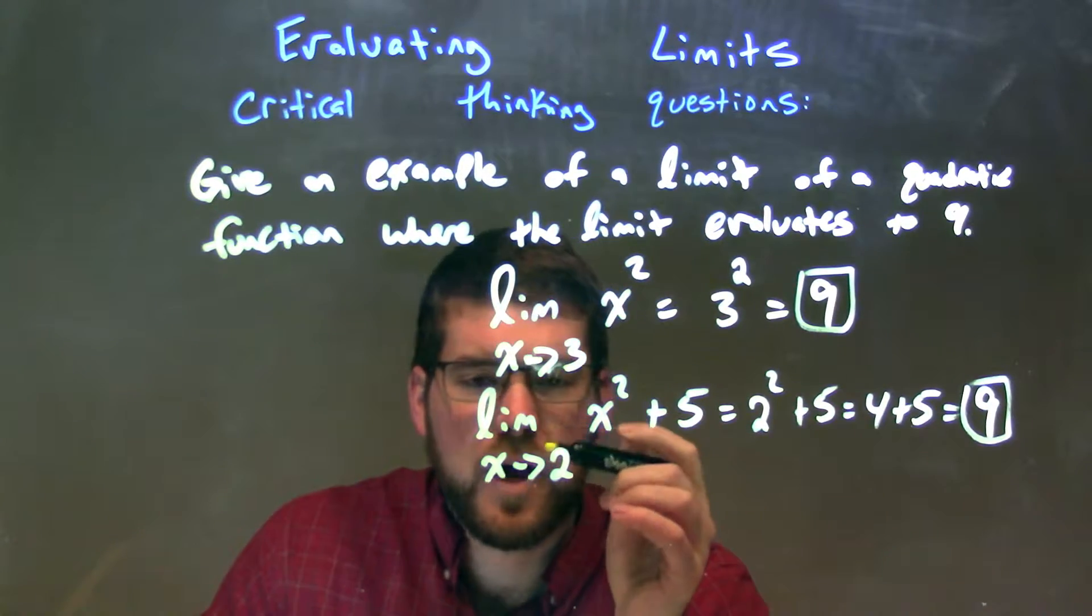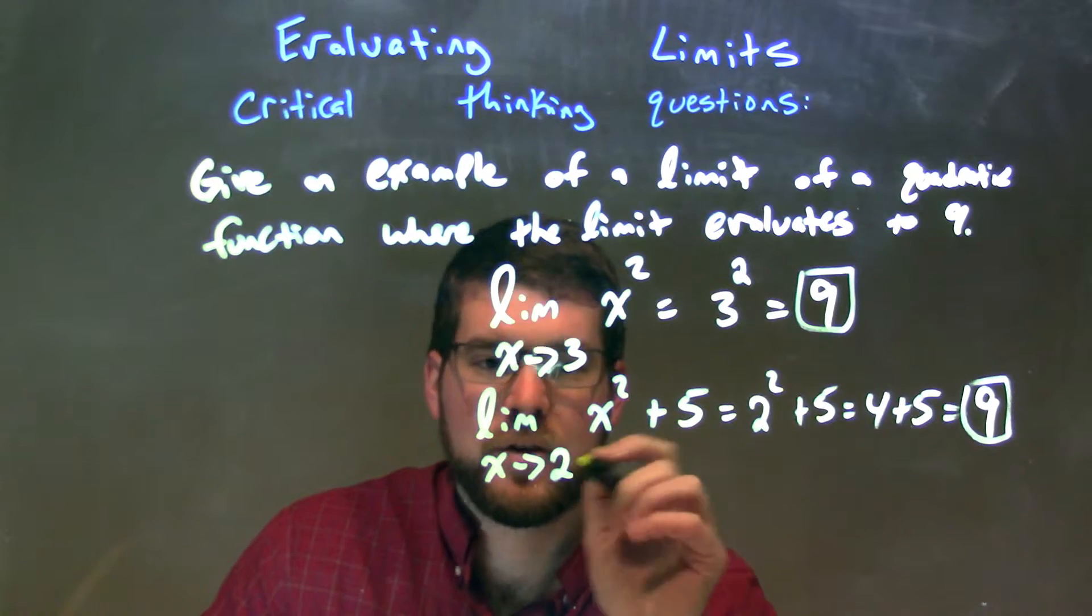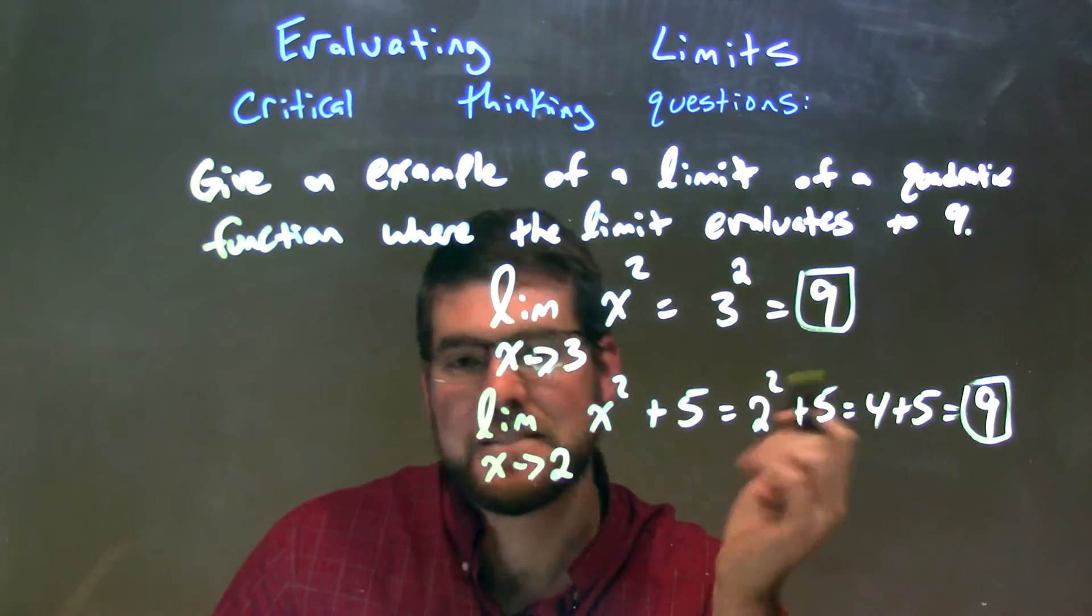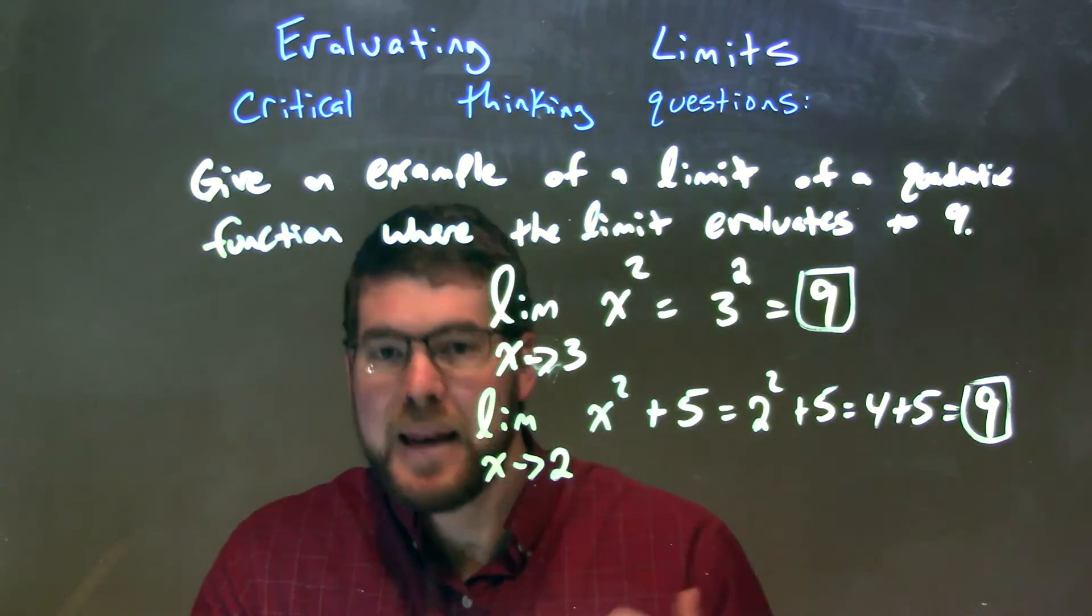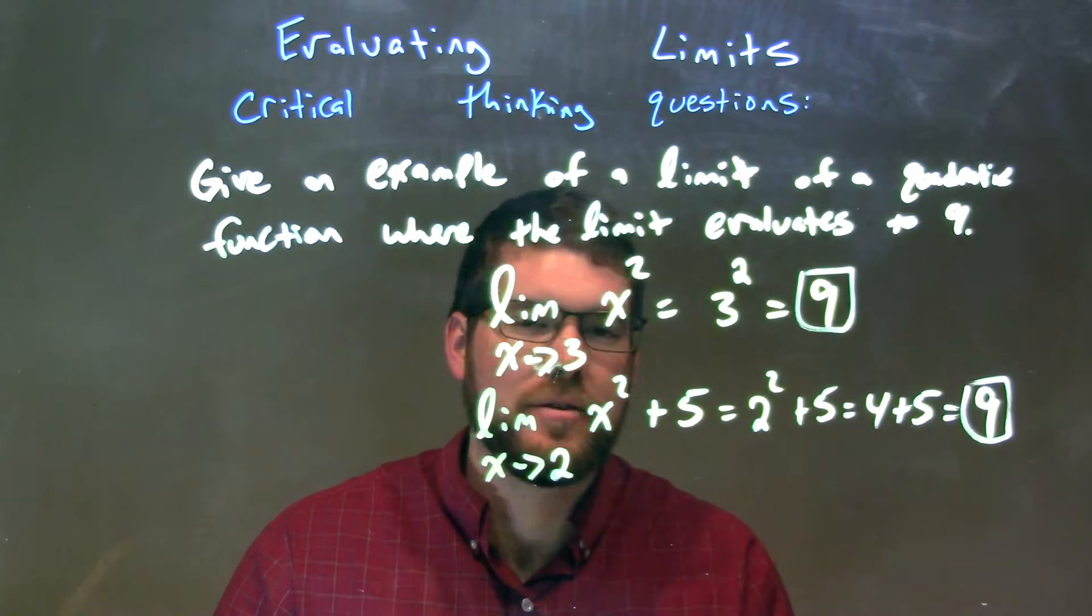Another one we could do is limit as x approaches 2 of x squared plus 5. 2 goes right into x, 2 squared is 4, 4 plus 5 is 9. Now there's many answers for this, but here are two simple ones to maybe help you.